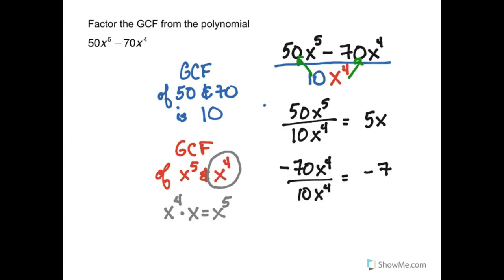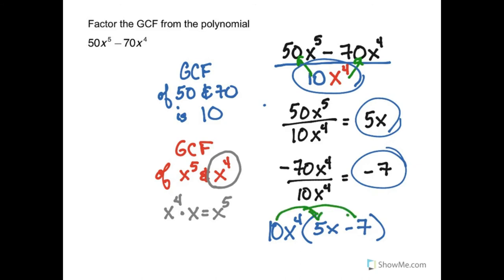So the number on the bottom that I divided by the 10 x fourth goes outside the parentheses. And inside the parentheses goes the 5x and the negative 7. If I were to use the distributive property and multiply 10 x fourth by the expression in parentheses, I would get back 50 x fifth minus 70 x fourth. And you can always check your work that way.